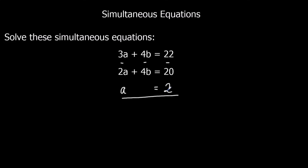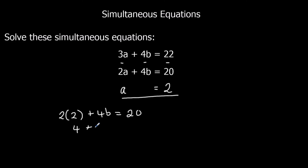And 22 take away 20 is 2, so a is equal to 2. We can use that to find b. If I substitute this in to either of these two equations I'll find b. I'm going to choose the second one. 2a, which I know is 2, so 2 twos plus 4b equals 20. Take 4 away from both sides, so 4b is equal to 16, and divide both sides by 4, so b equals 4.